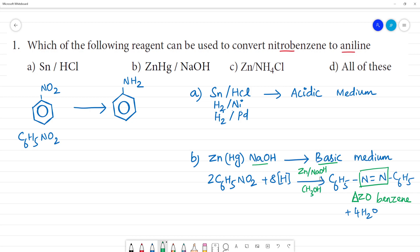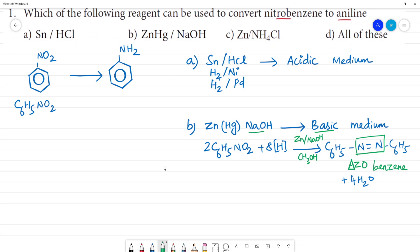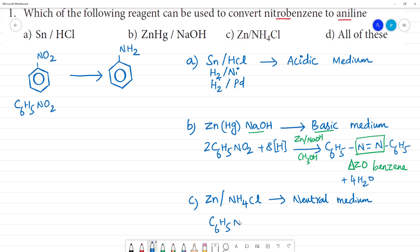For the third option, we have NH4Cl. This is a neutral medium. Zn with NH4Cl — this is neutral medium. In this neutral medium, C6H5NO2 gives C6H5NHOH, that is phenylhydroxylamine.